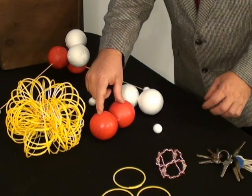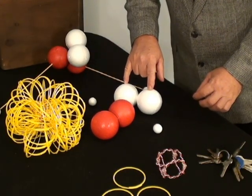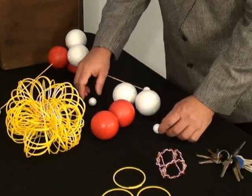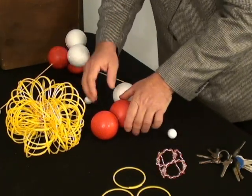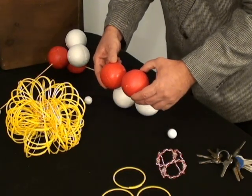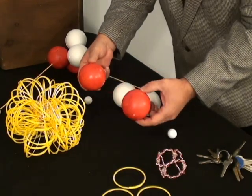Protons are supposed to have a positive charge, neutrons are supposed to have a neutral charge, and the electrons are supposed to have a negative charge. At the core, you would stick two protons together plus two neutrons.